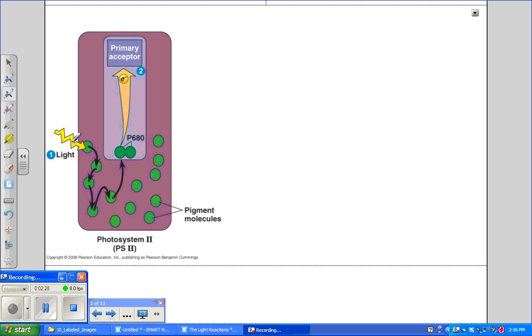So let's get started. When a photon of light strikes a pigment molecule in a light harvesting complex, it boosts one of the electrons in the pigment molecule to a higher energy level. As this electron falls back to its ground level state, it passes energy to the next pigment molecule, and so on and so forth.